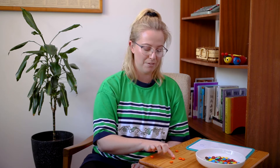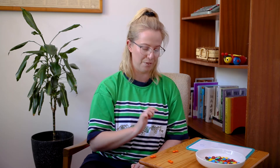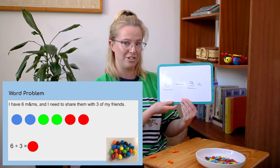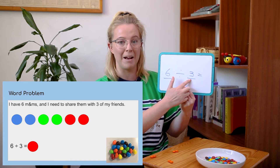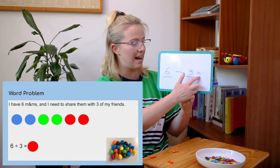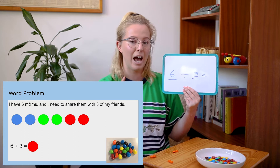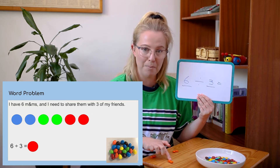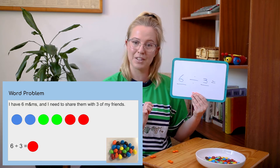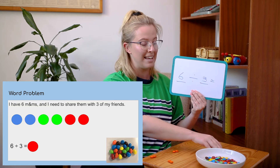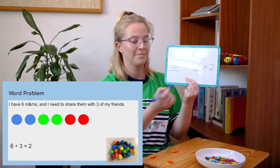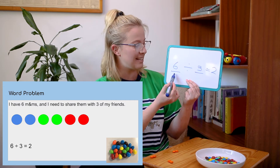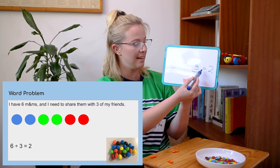I've got three left, so I'm going to share them out one by one again — first friend, second friend, third friend. Looking at our equation, I have six M&Ms altogether and I shared them out into three groups for my three friends. The equals is asking how many does each friend get. Let's have a look at how many are in each group: there's two in this group, two in this group, two in this group. Which means each of my friends gets two each. So let's write that down — the whole equation is six divided by three equals two.